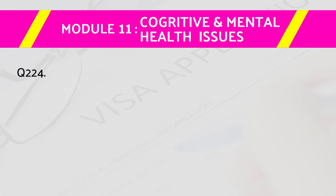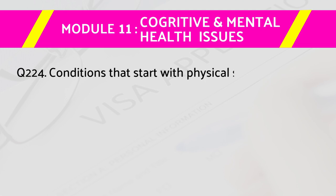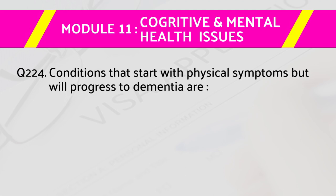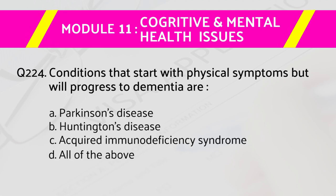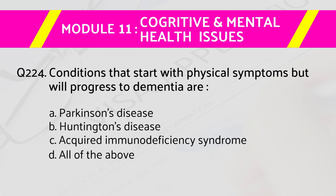Question number 224: Conditions that start with physical symptoms but will progress to dementia are — answers are: a) Parkinson's disease, b) Huntington's disease, c) acquired immune deficiency syndrome, d) all of the above. The right answer is d) all of the above.